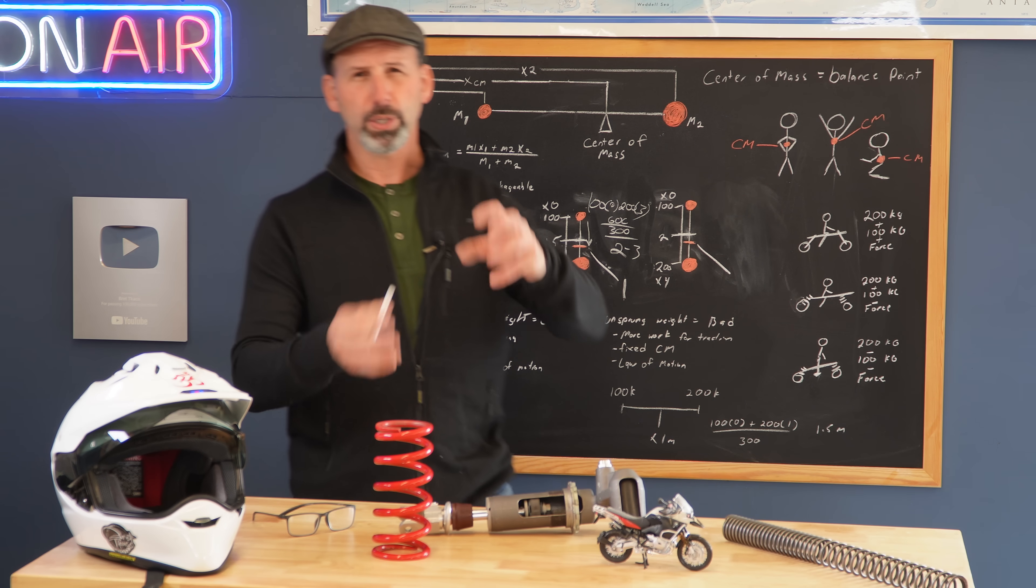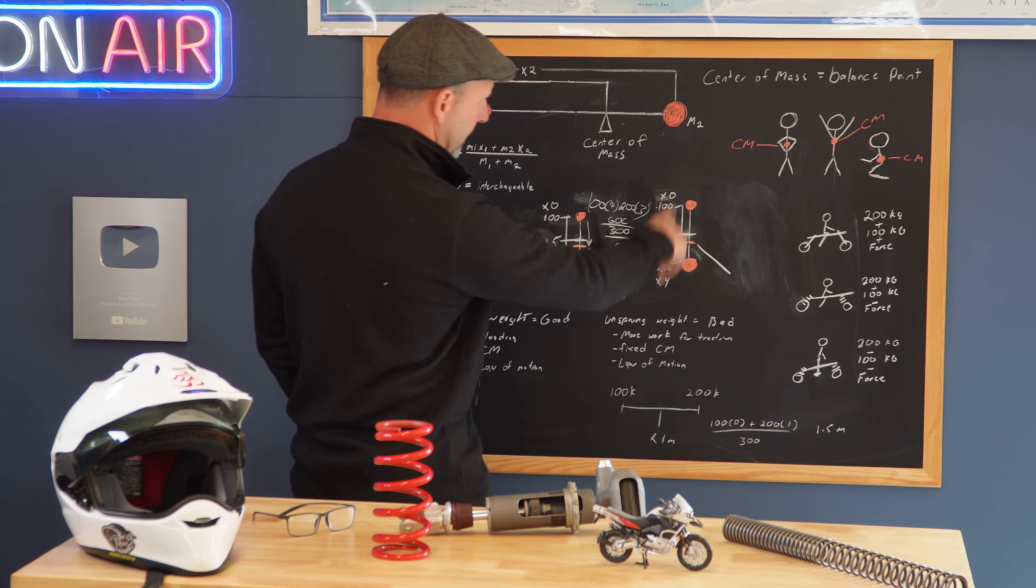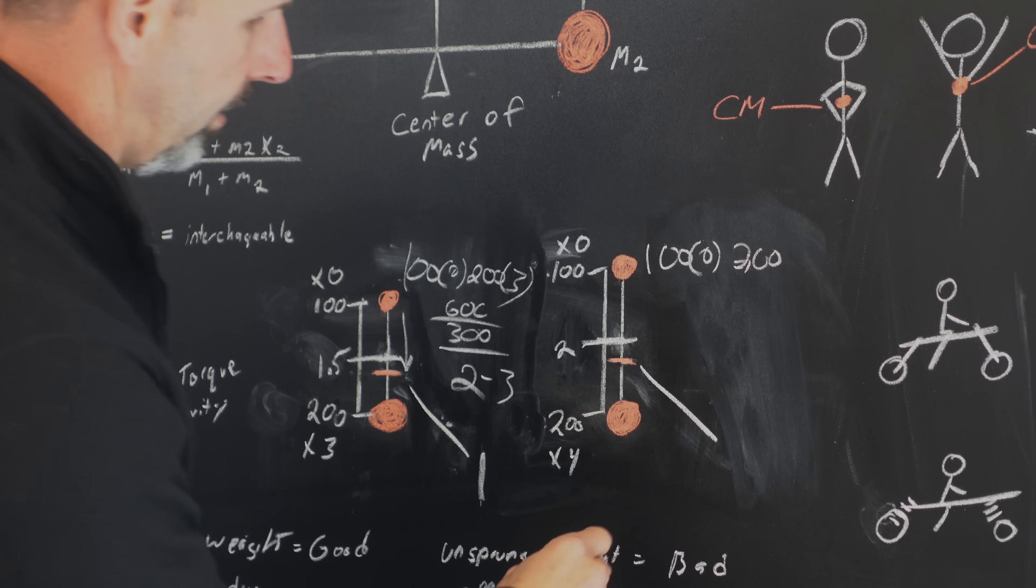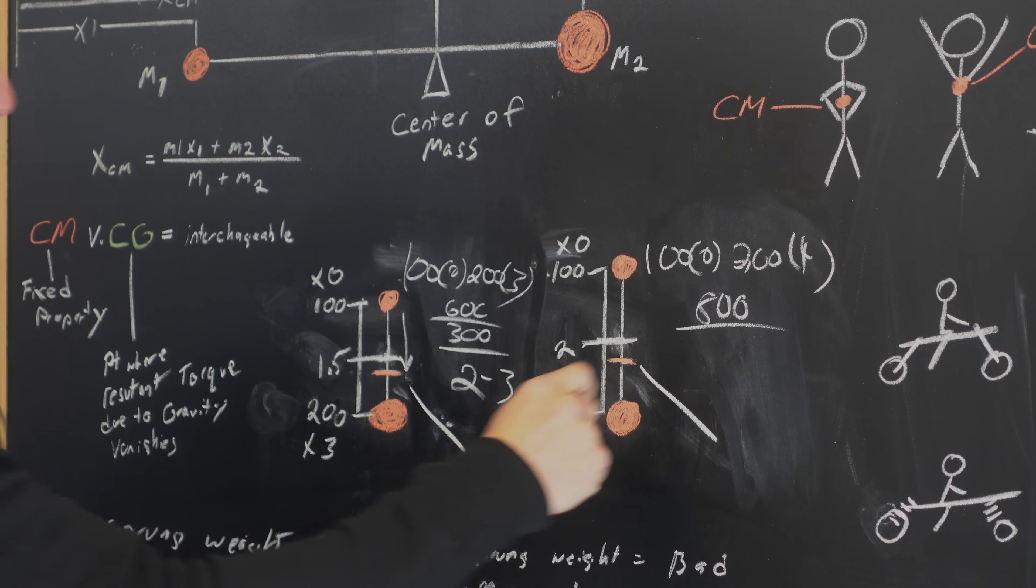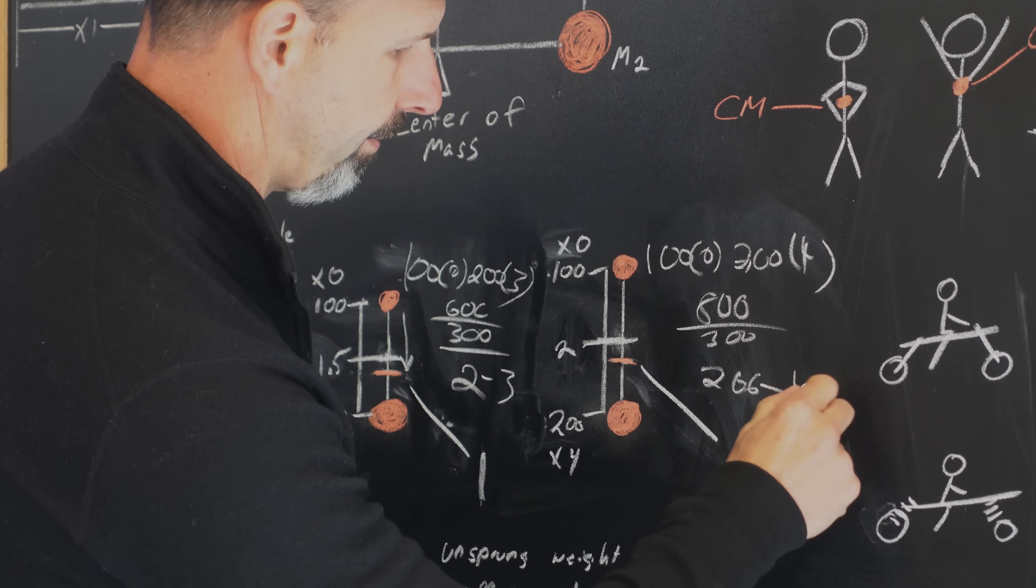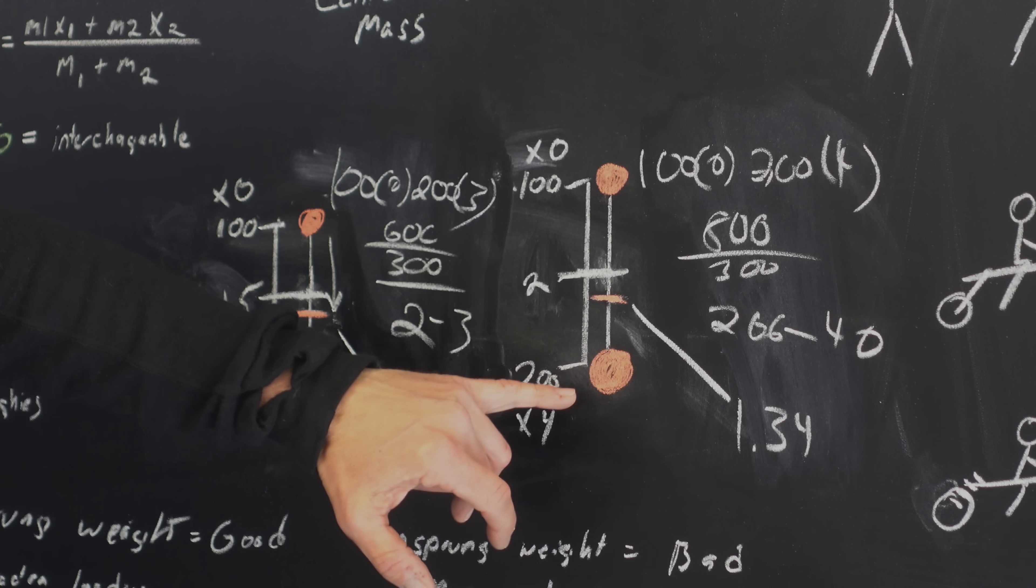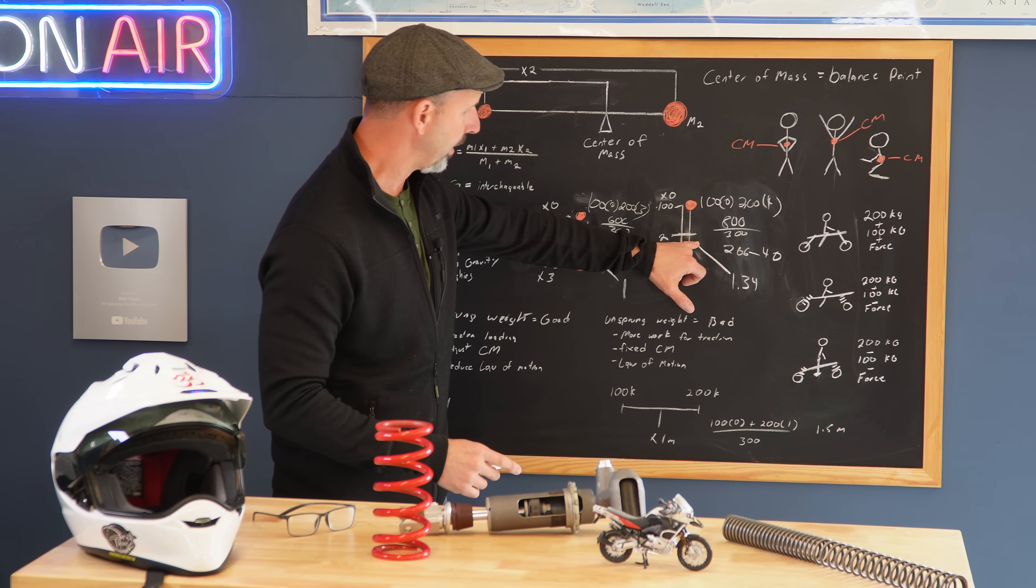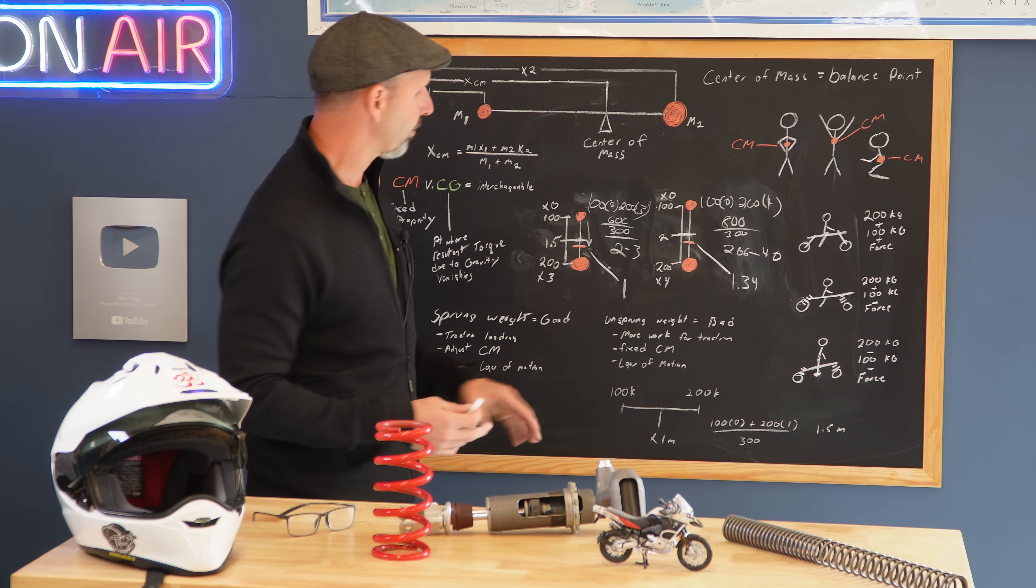Now, if we stand up on the motorcycle, we extend the distance between these two masses, and all we do is change that one number - the distance. We still have a 100-kilogram rider multiplied by zero. We take the 200-kilogram motorcycle, multiply by four. We end up with 800 combined. We divide by 300, which gives us 2.66. Subtract that from four, we get 1.34. The distance from the larger mass to the smaller mass was one; now it's 1.34. So by raising the distance or changing the distance between the two masses, we have raised that center of gravity or center of mass.